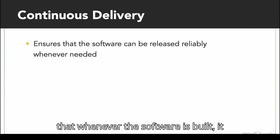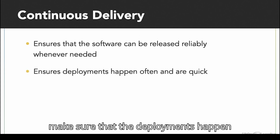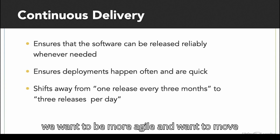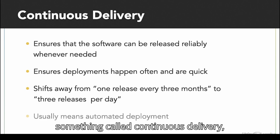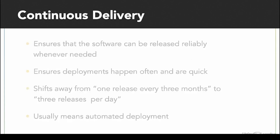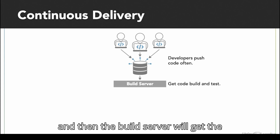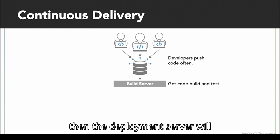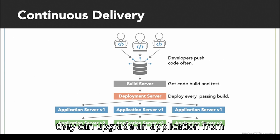Now let's look at Continuous Delivery. We want to make sure that whenever software is built, it can be released reliably whenever we need it. We want deployments to happen often and quickly — moving away from one release every three months to three releases a day. That can only be done with Continuous Delivery, where deployment is fully automated. The pipeline has developers pushing code often, a build server that builds and tests it, and a deployment server that deploys successful builds to the application server.